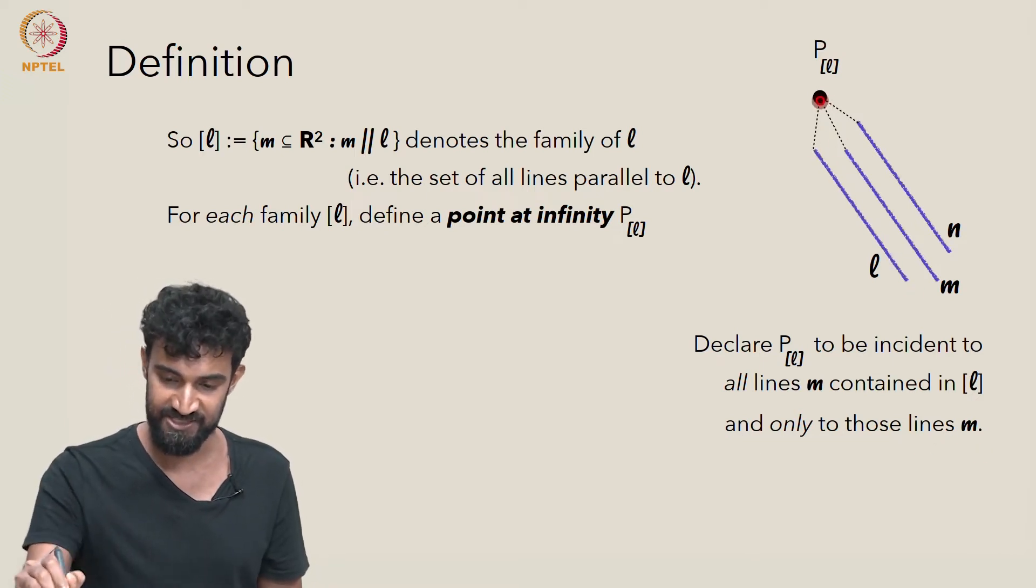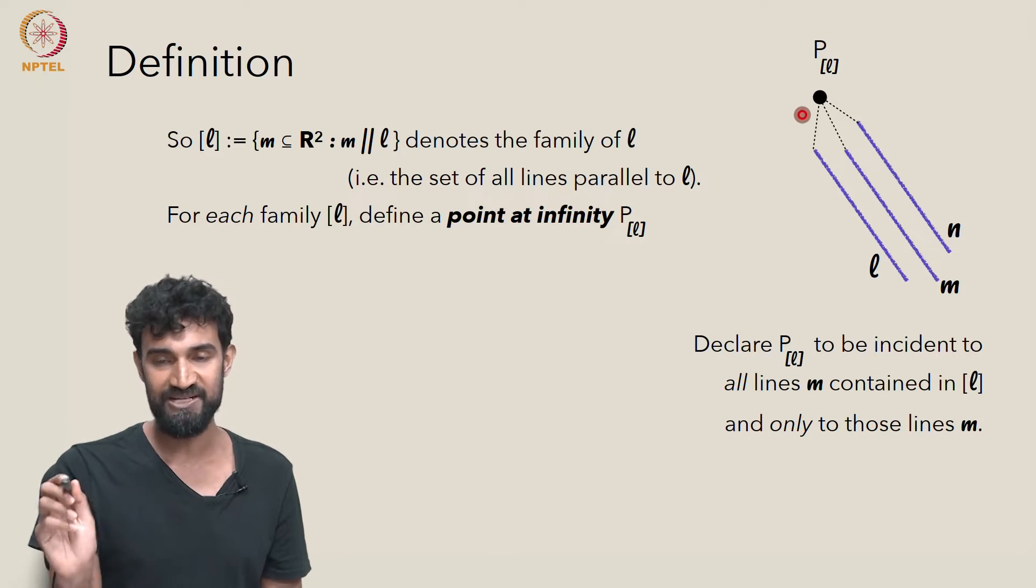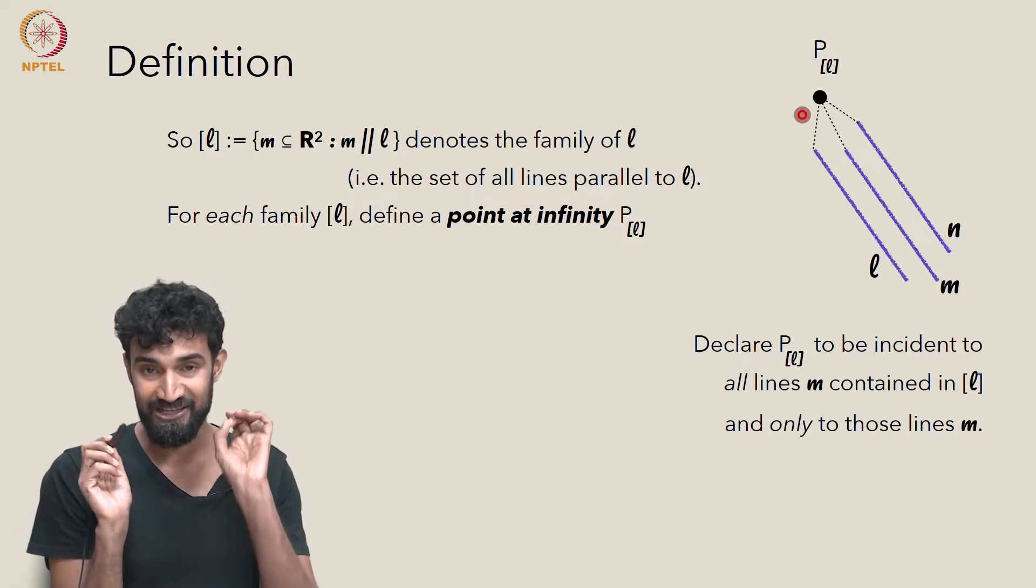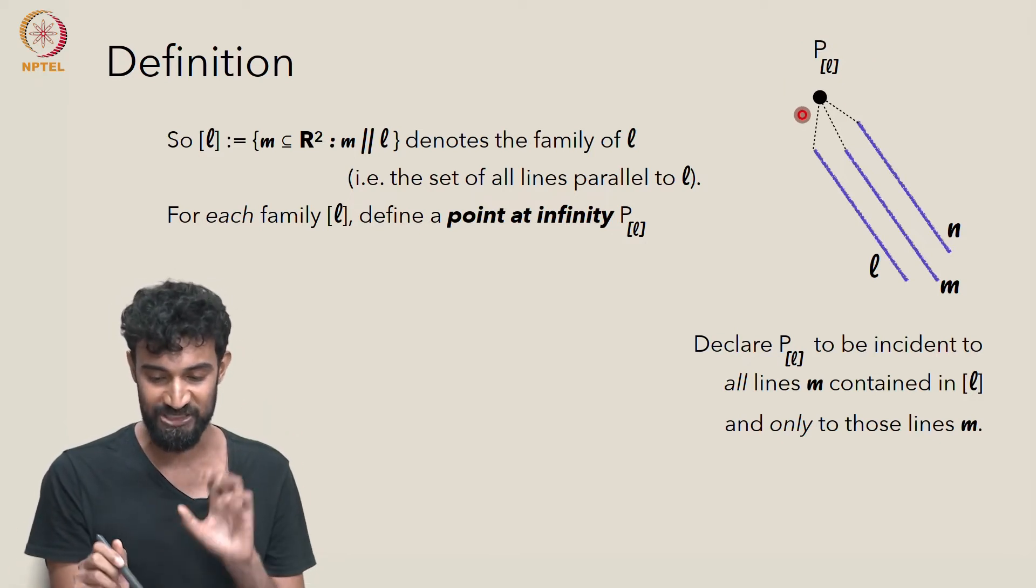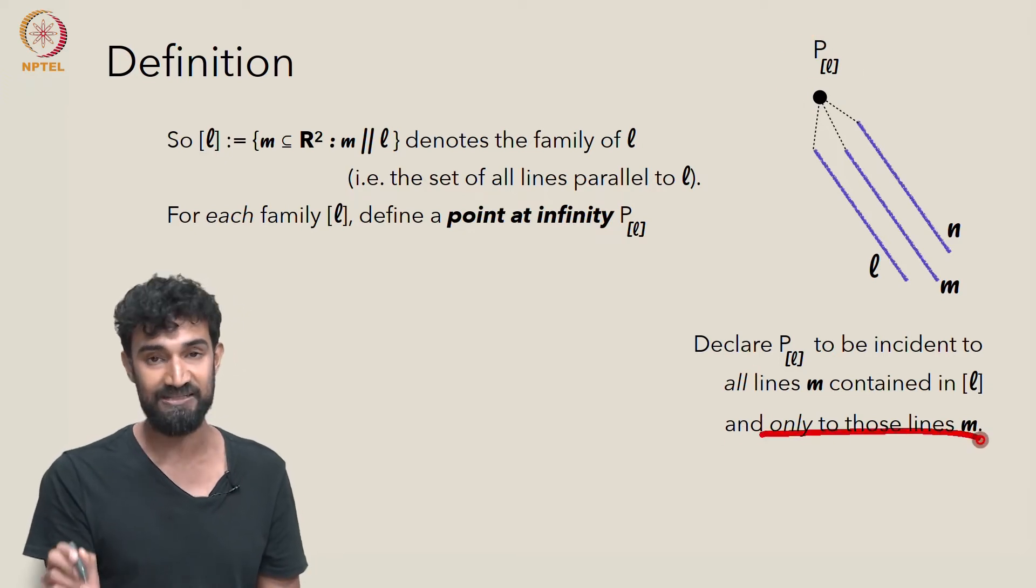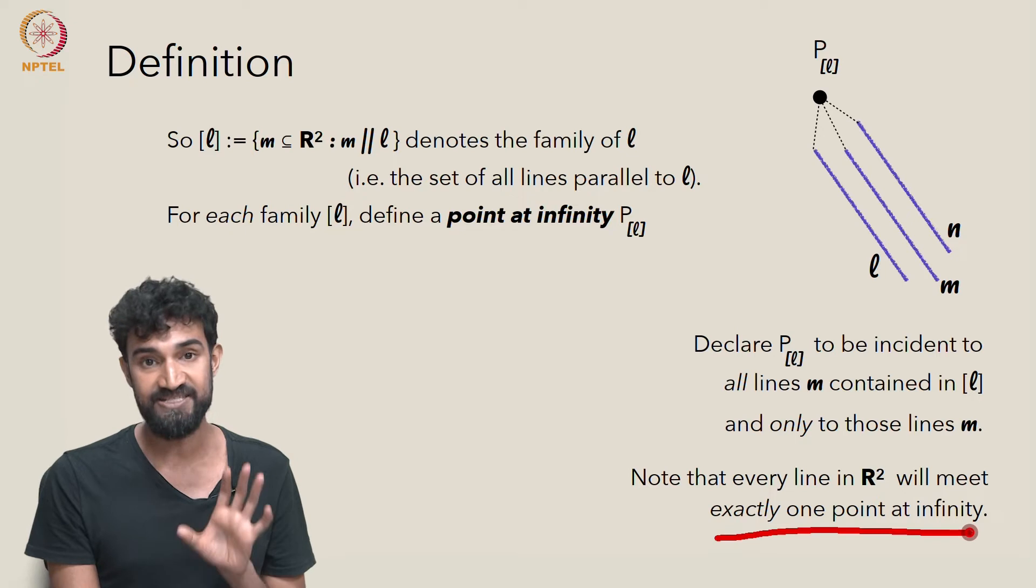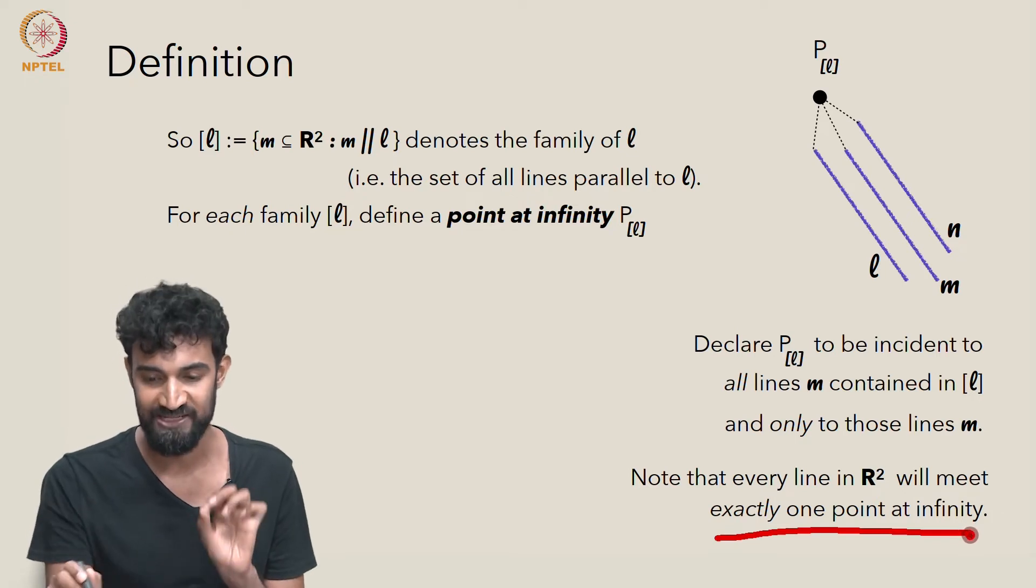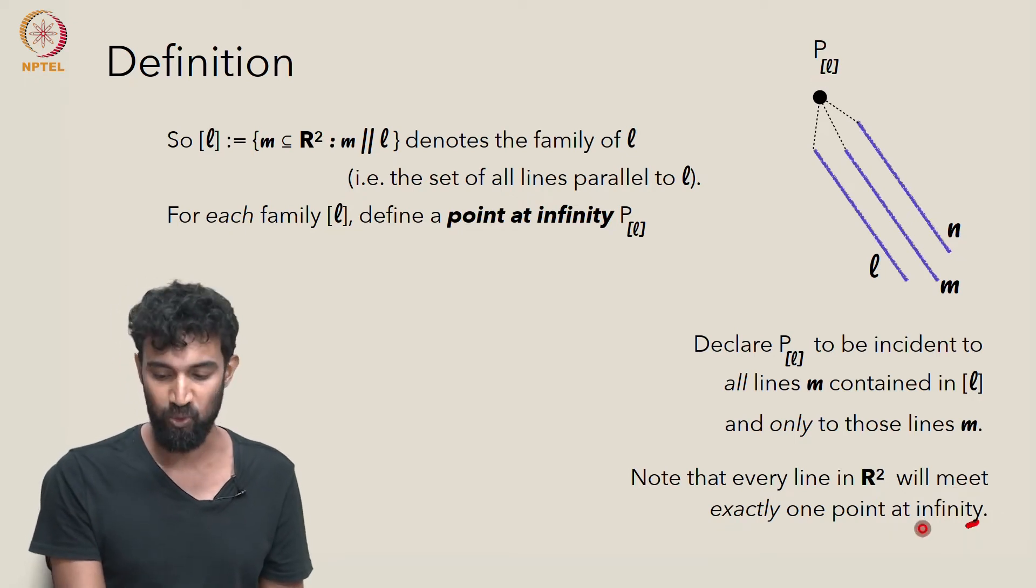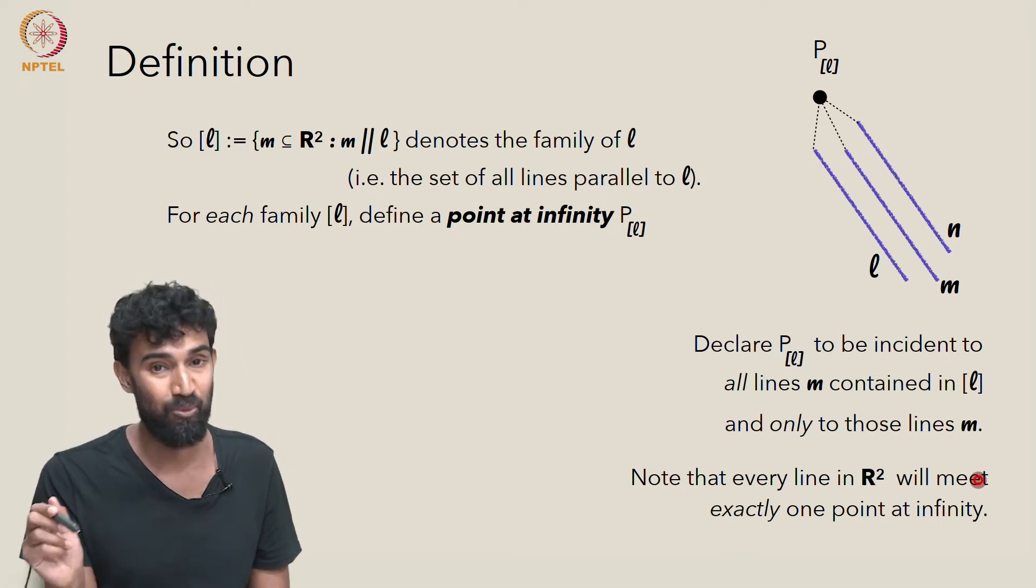So it's incident to this, to this, to this guy, to every guy in this family, every line in this family. PL is going to be incident to all of those. I'm declaring that incidence relation to be true. But it's not going to be incident to any line that's not in that family. Now, note that every single line in R² is going to meet exactly one point at infinity, the one associated to its unique family. It won't meet any other point at infinity.